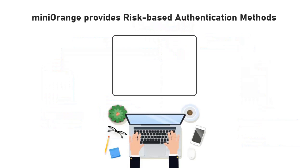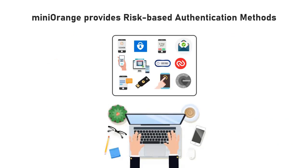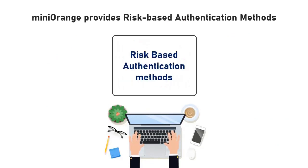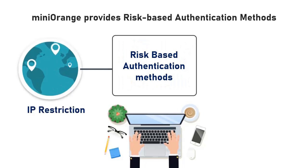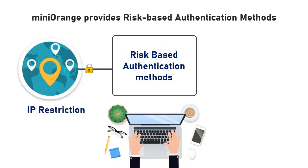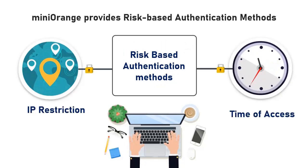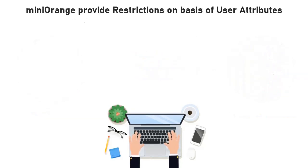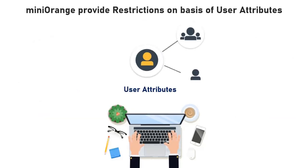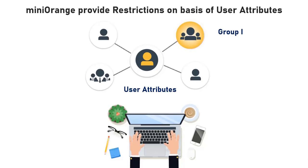In addition to the 15 plus MFA methods, Mini Orange also provides risk-based authentication, which includes authentication based on IP restriction and authentication based on time of access. Mini Orange can also provide restrictions on the basis of user attributes like groups and many more.